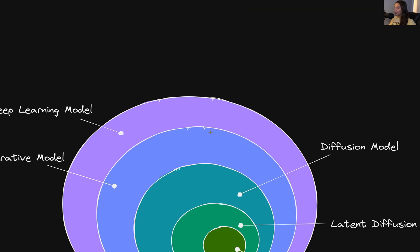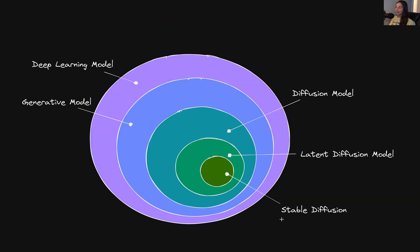Now, elaborating more on the nomenclature here, we've probably all at this point at least heard of really popular models like Stable Diffusion. And Stable Diffusion is indeed a latent diffusion model.